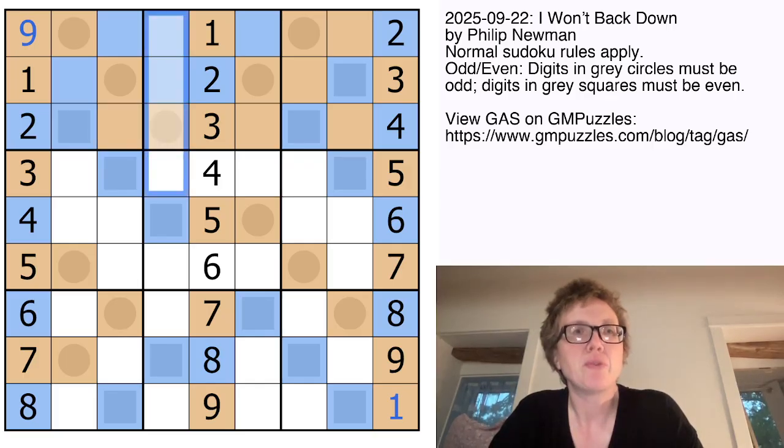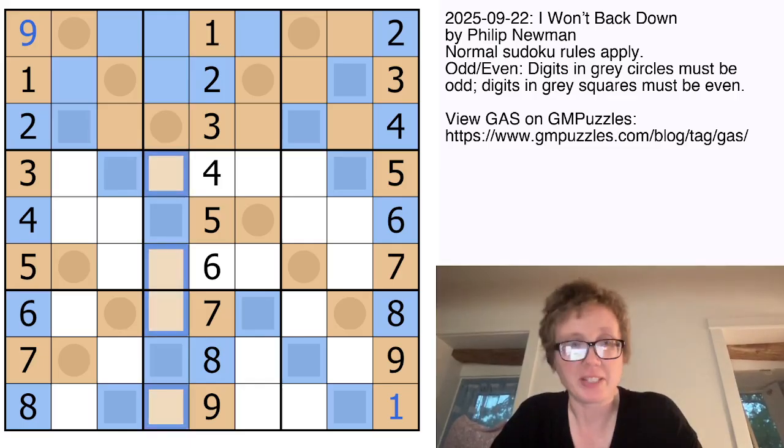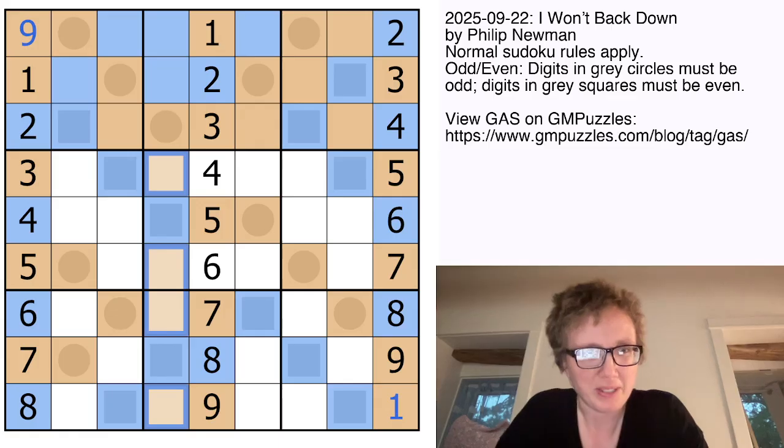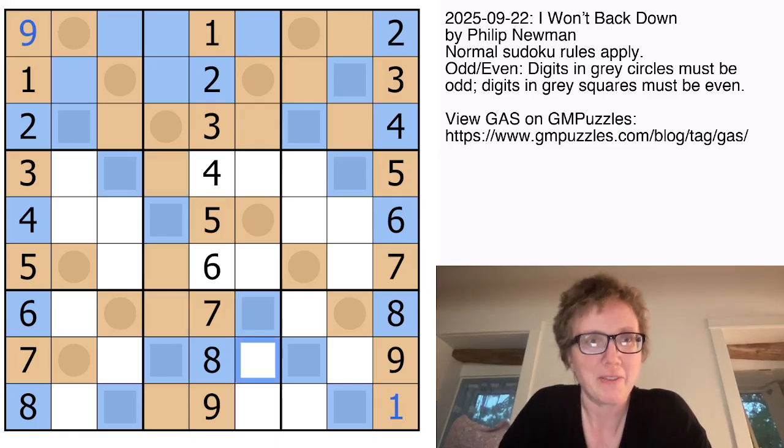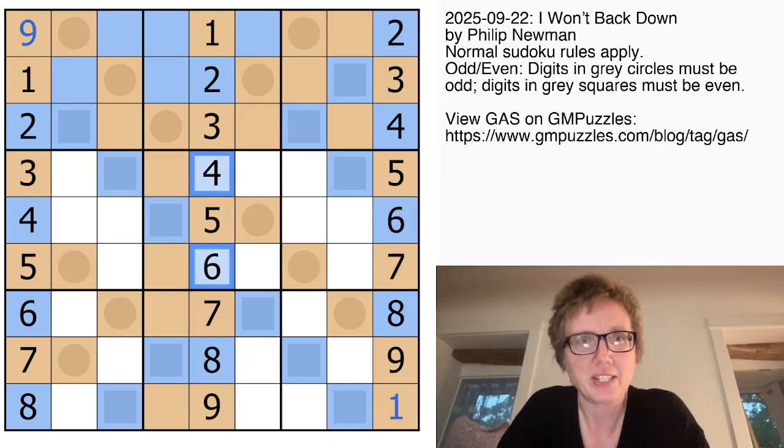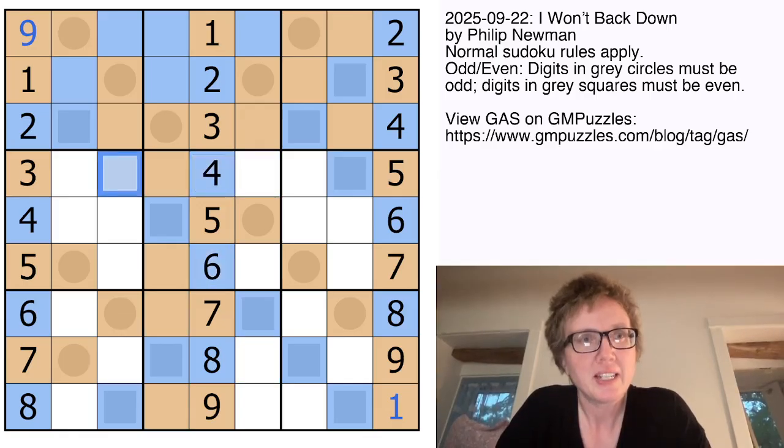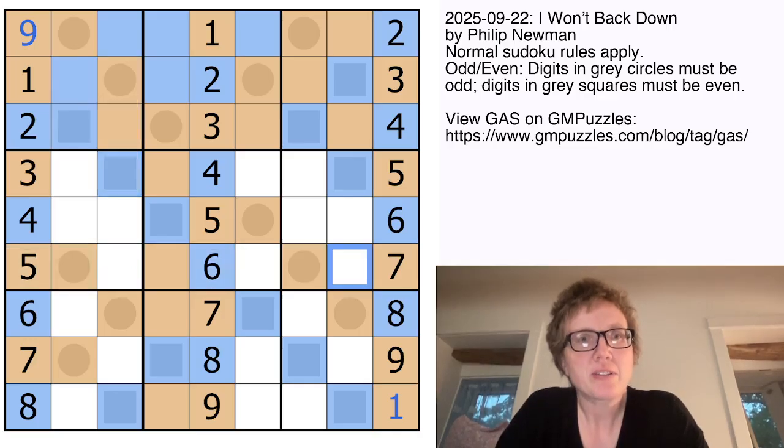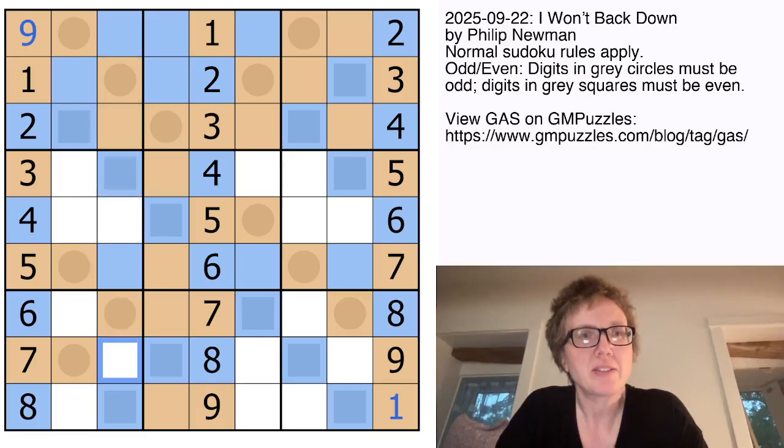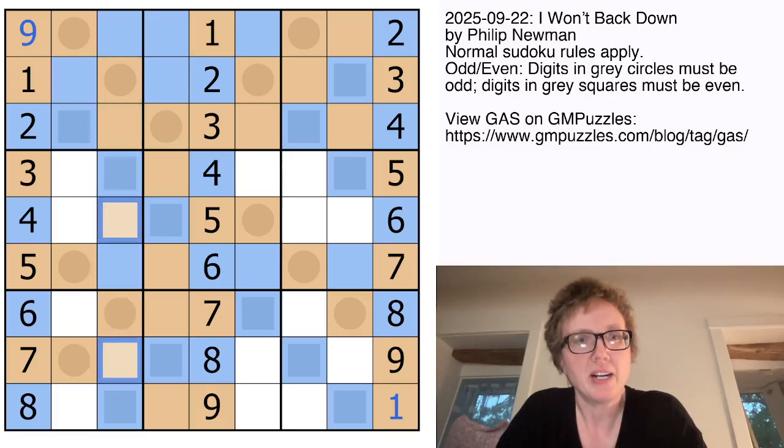Here we've got four even digits in column four already. I missed this for a really long time when I did my first solve of this puzzle, so I'm going to make a point of it now. And now we have all of our odd digits in row six, so the rest of row six is even. We now have all of our even digits in column three, so the rest of column three is going to be odd.